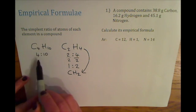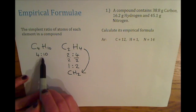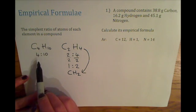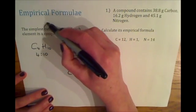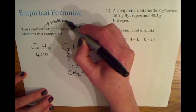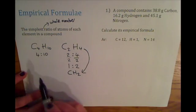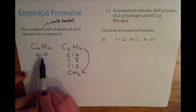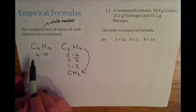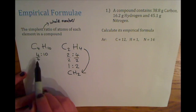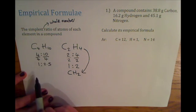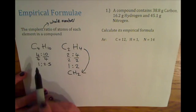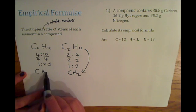For C4H10, this is also not the simplest ratio of atoms. Working out its empirical formula highlights an important point: the simplest ratio has to be a whole number — you can't have a decimal. So dividing both sides by 4 gives us 1 to 2.5, and we cannot write CH2.5 because it's a decimal.